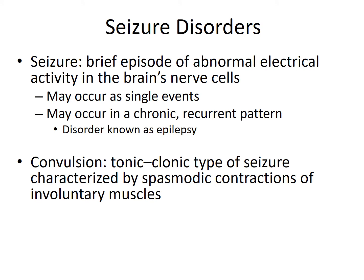Let's talk about seizure disorders. Seizures are never a good thing — basically, it's a brief episode of abnormal electrical activity in the brain's nerve cells. Just like the heart, the brain is an electric organ, and when that electricity is disrupted, a person is capable of having seizures. We may see seizures as a single event, such as febrile seizures in children, or as an adverse effect of medications. Chronic recurrent patterns of seizures are known as epilepsy.